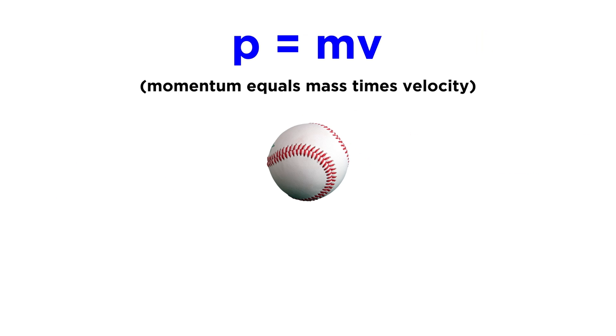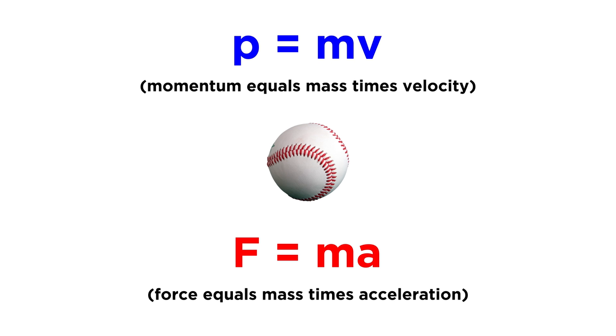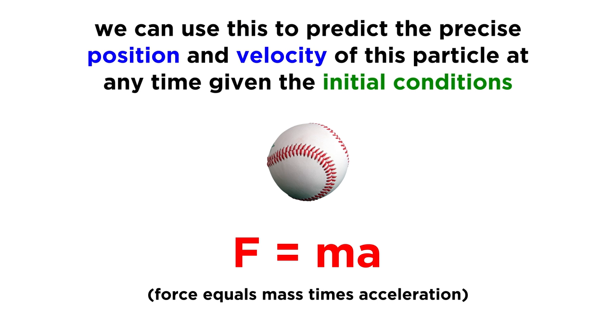We can discuss the momentum of that object using p equals mv, where momentum equals mass times velocity. From here, Newton's famous equation f equals ma describes the acceleration exhibited by an object as a function of the force applied upon it, which will be inversely proportional to its mass. This equation could be used to predict the precise position and velocity of a classical particle at any time, provided that we know the initial conditions.